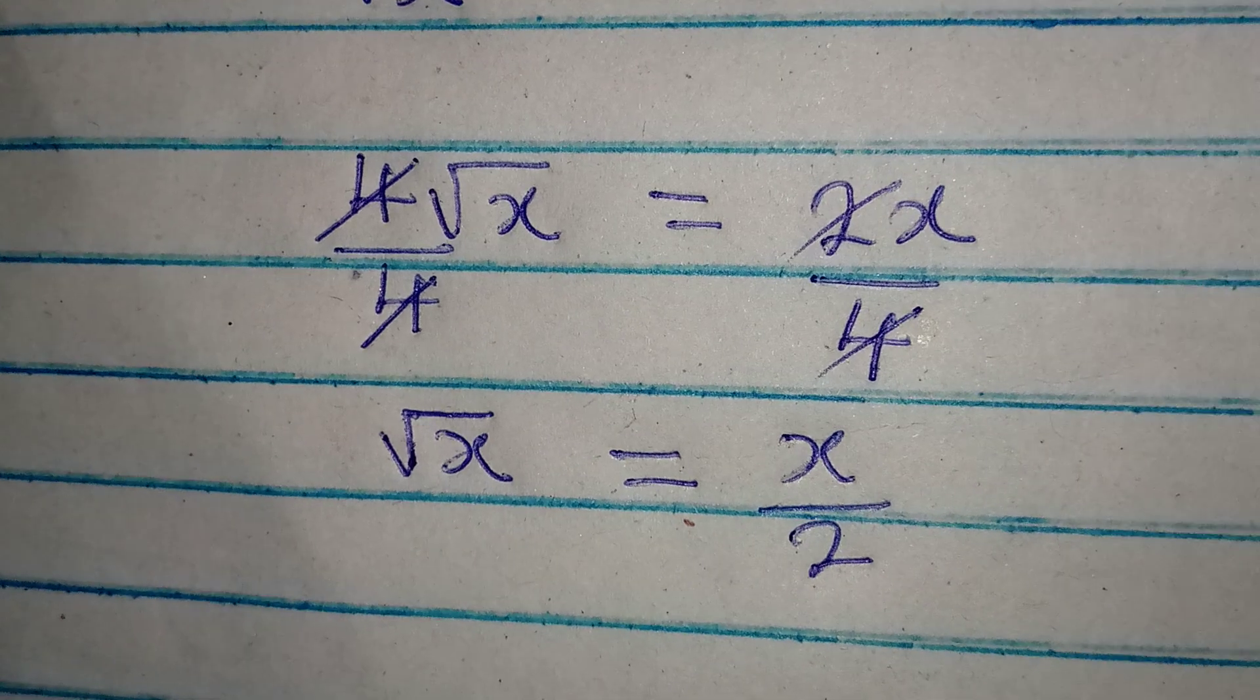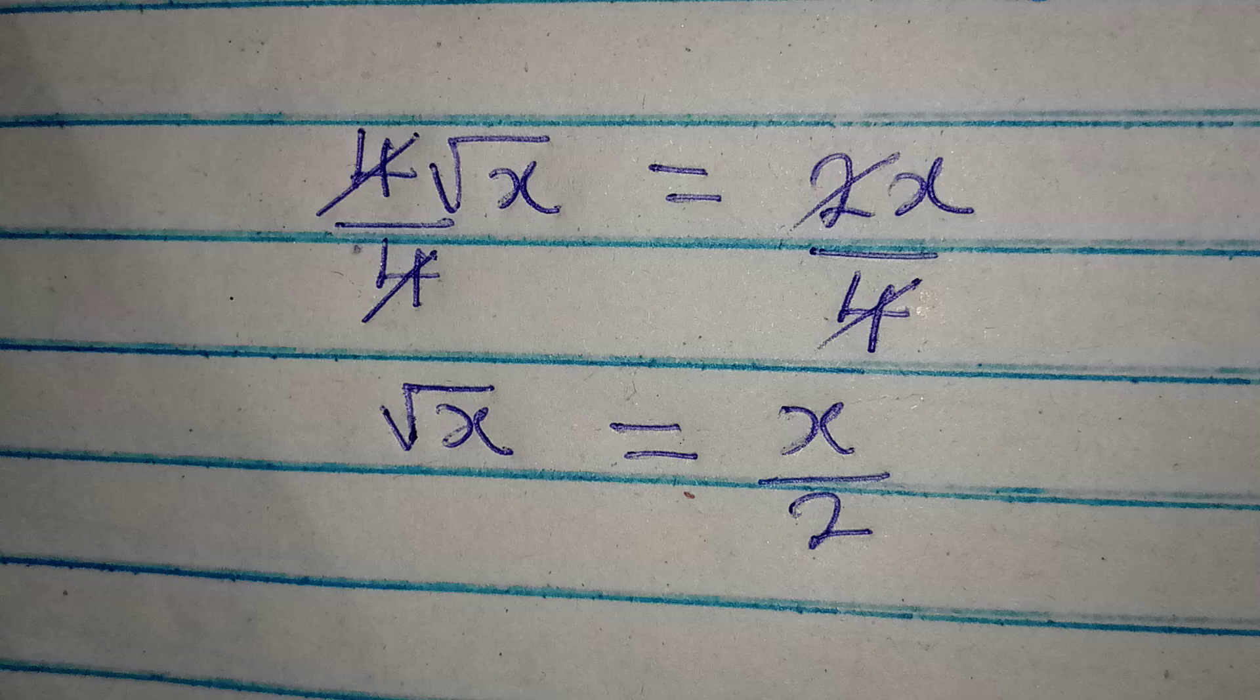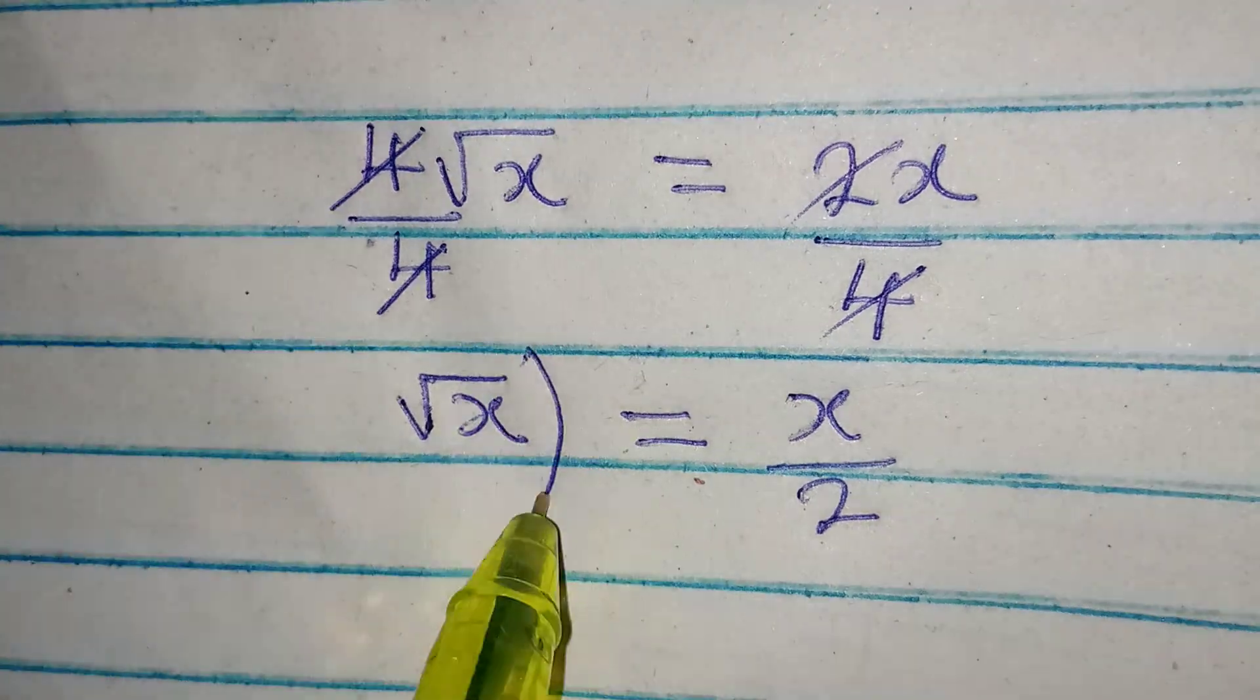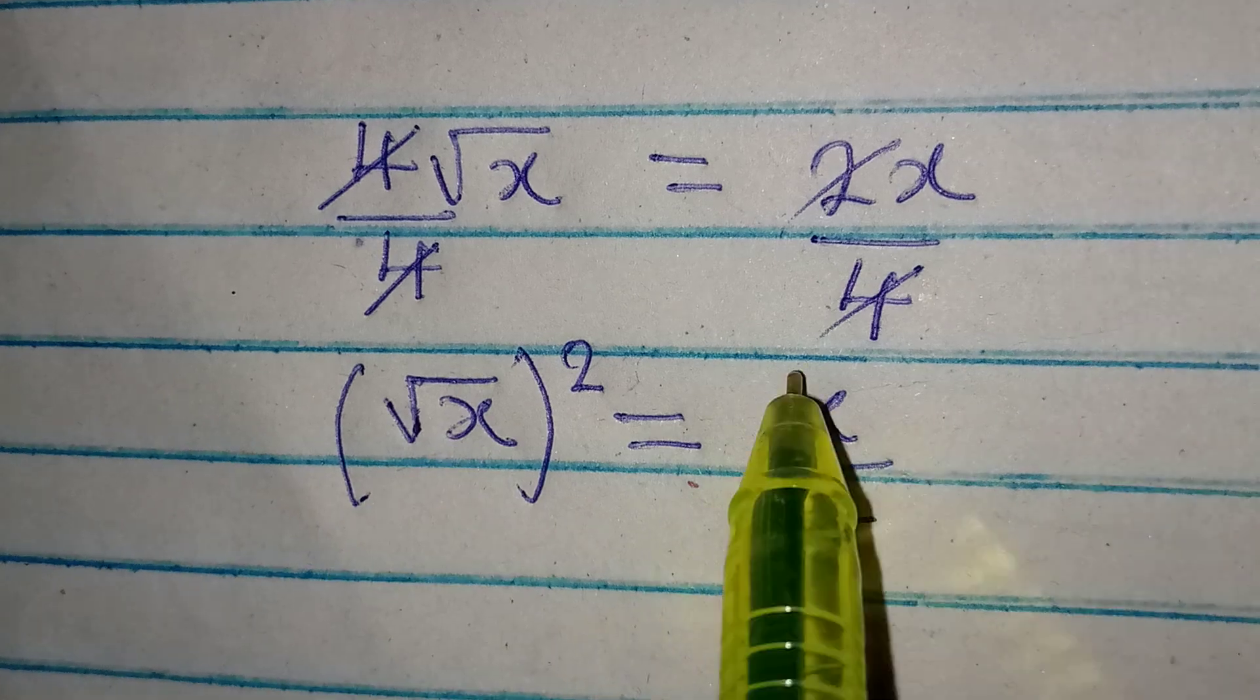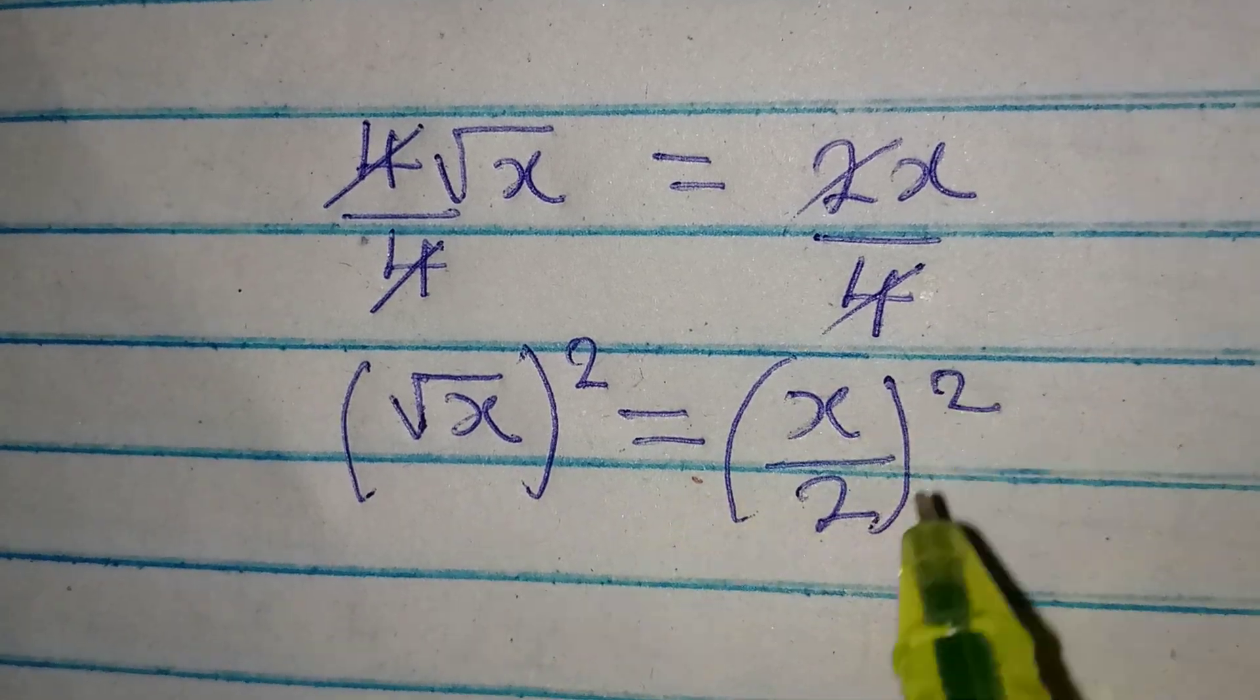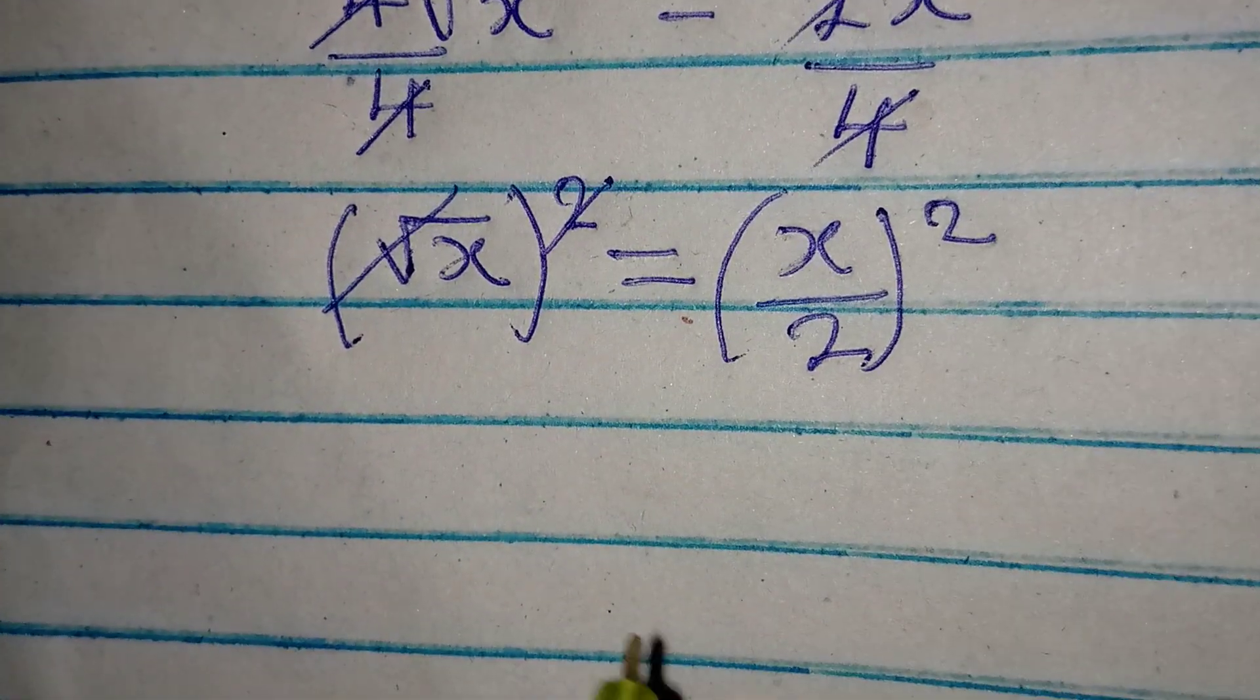The next thing we can do is to square both sides. We are doing this so that the square root here will be eliminated, and we square this as well.